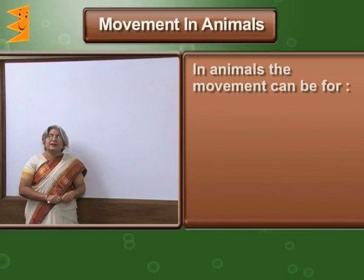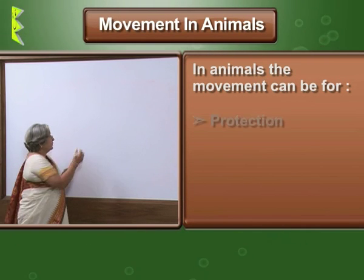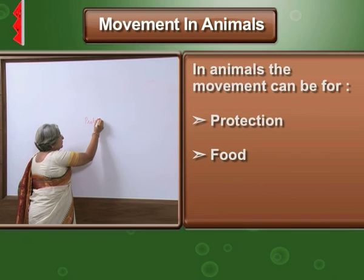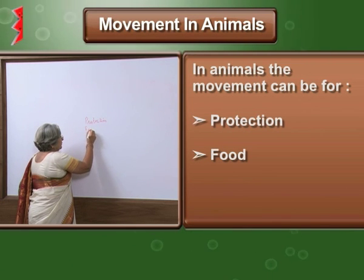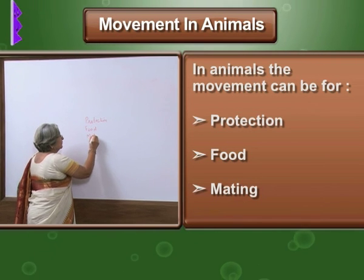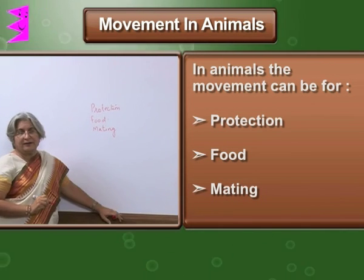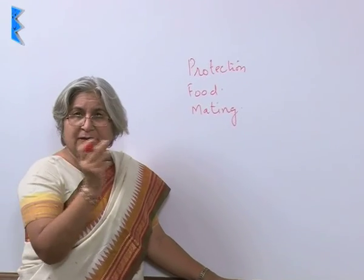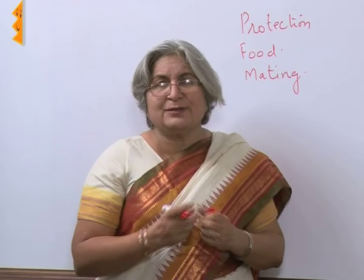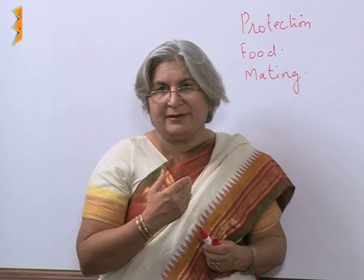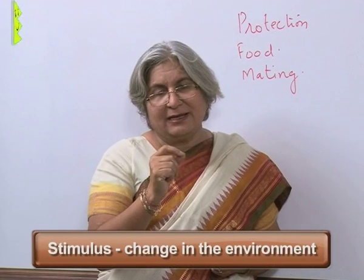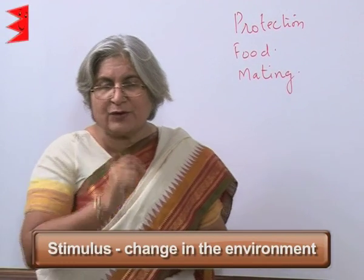In animals, movement can be for protection, for food, for mating. But how does it pick the changes in the environment? What is it that helps us to pick the stimuli from the environment? What is the stimulus? Stimulus is a change in the environment — it is a situation.